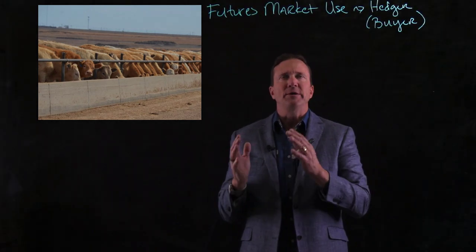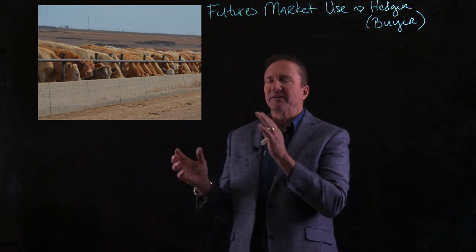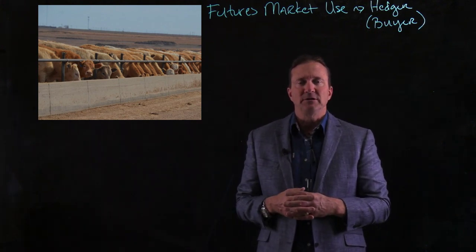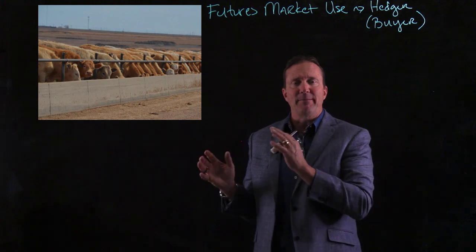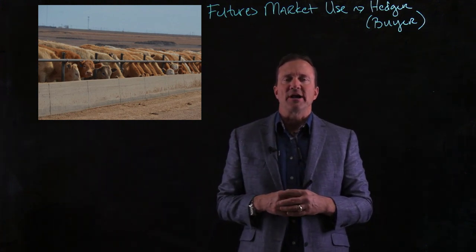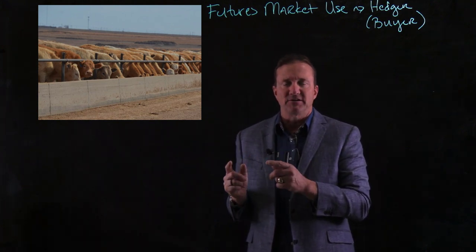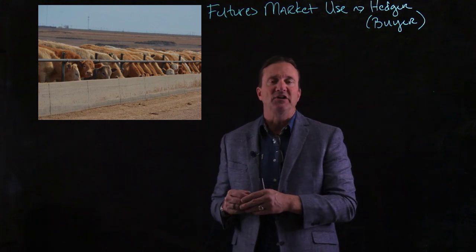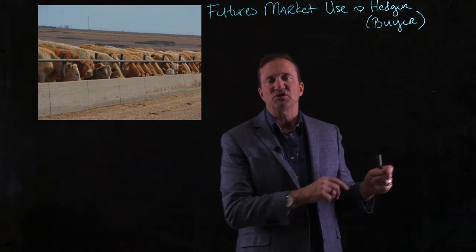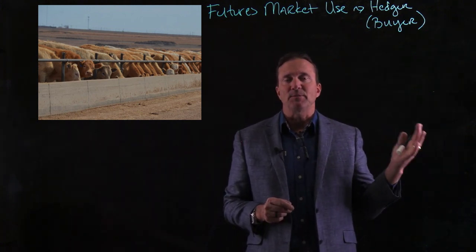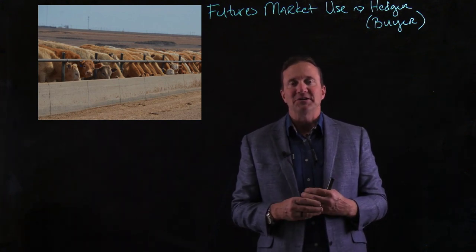Welcome to my video about how we use the futures market as a hedger, but in this example I'm talking about a buyer. I have this feed yard here in my picture. I'm a hedger but I'm a buyer — I own this feed yard, and this operation requires me to get cattle bought at the right price so I can feed them. I'm going to feed these cattle a very specific way and then sell them later, hopefully for more than I paid.